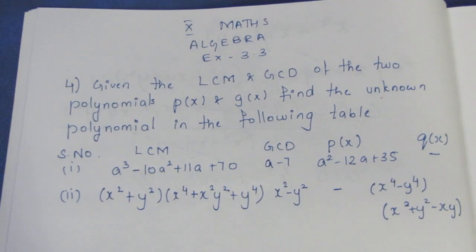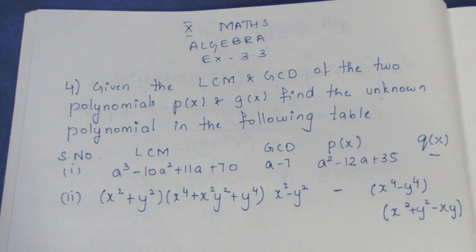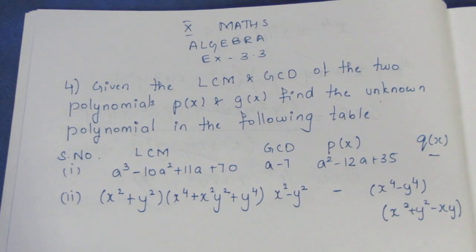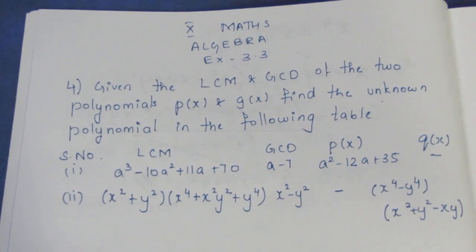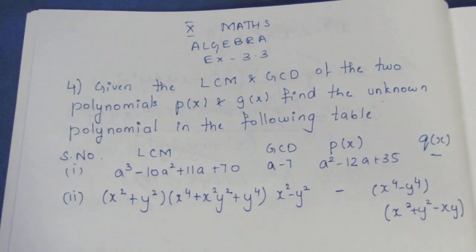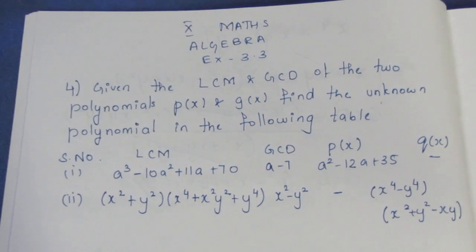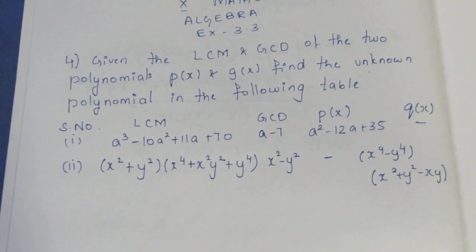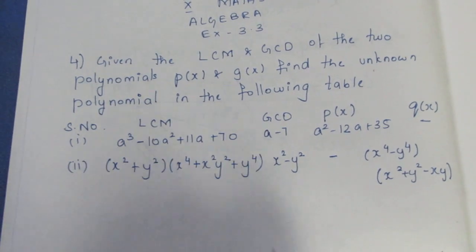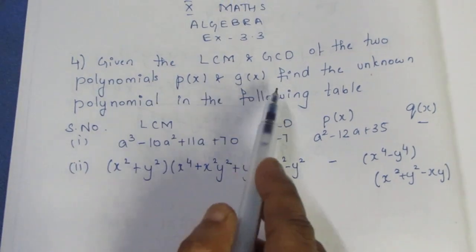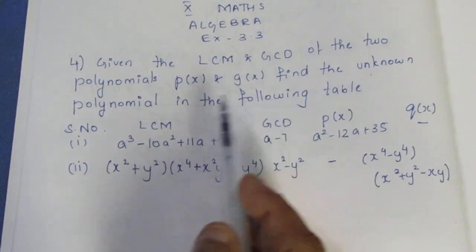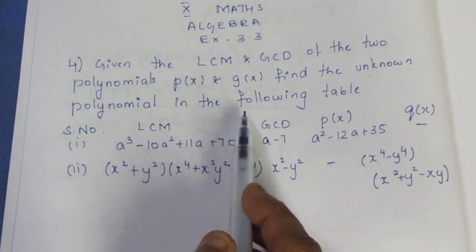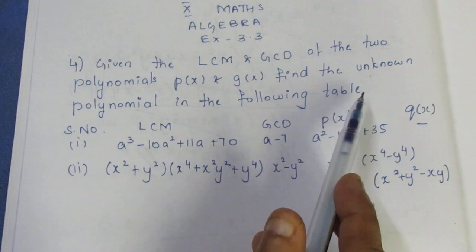Hello viewers, I am Ithli. In the 10th standard Max Algebra exercise 3.3, fourth question video. Given the LCM and GCD of two polynomials P and Q, find the unknown polynomial in the following table.